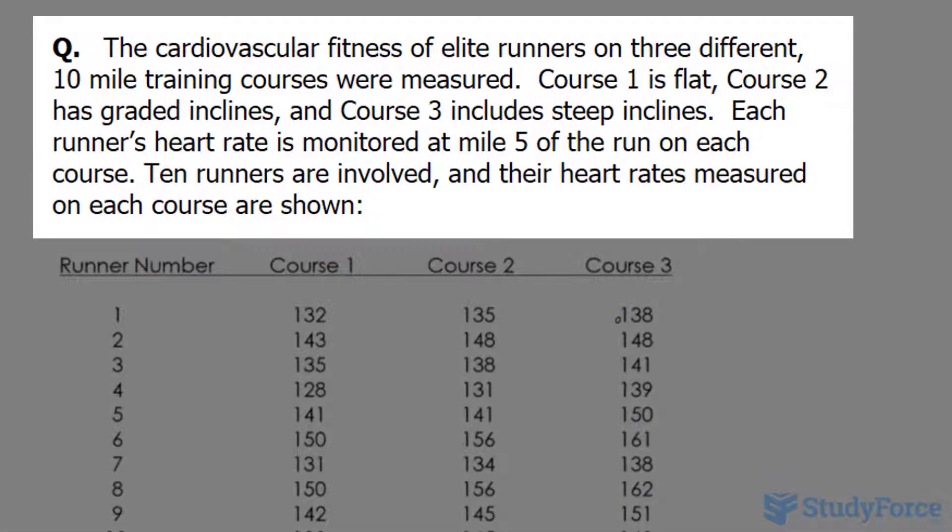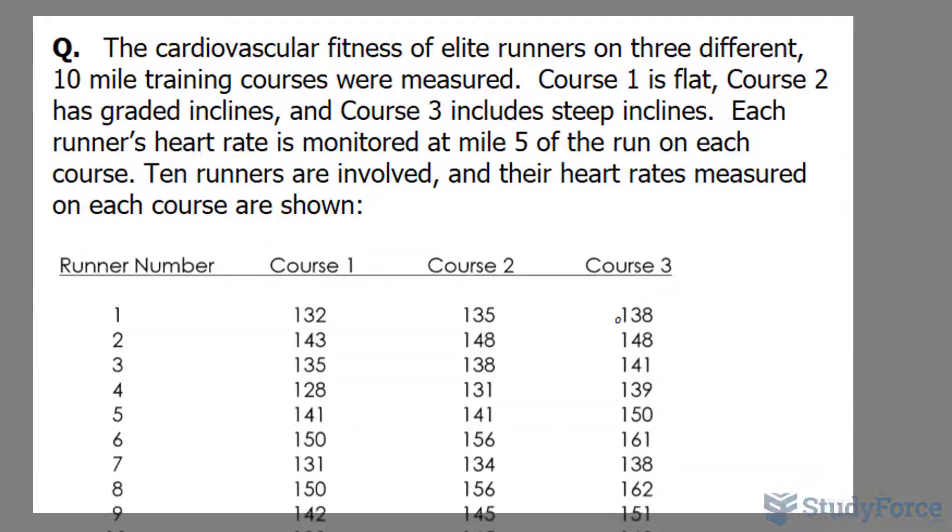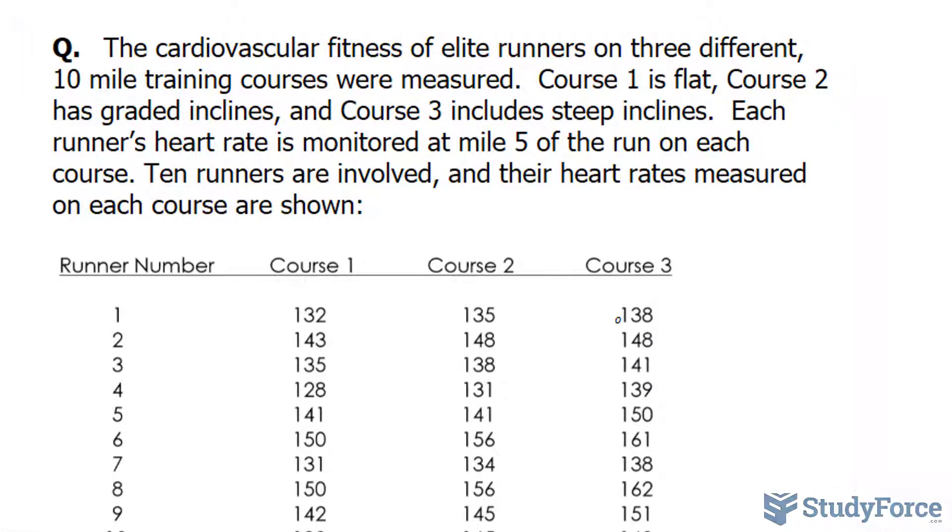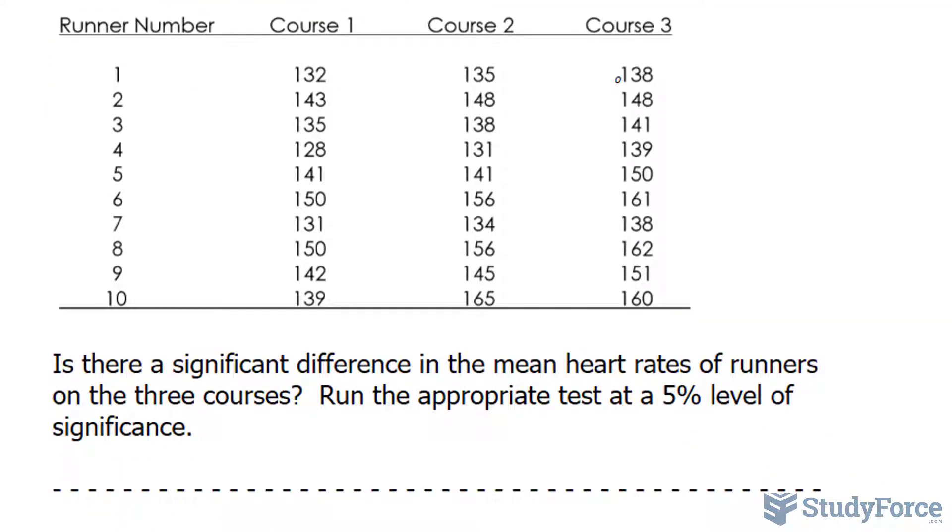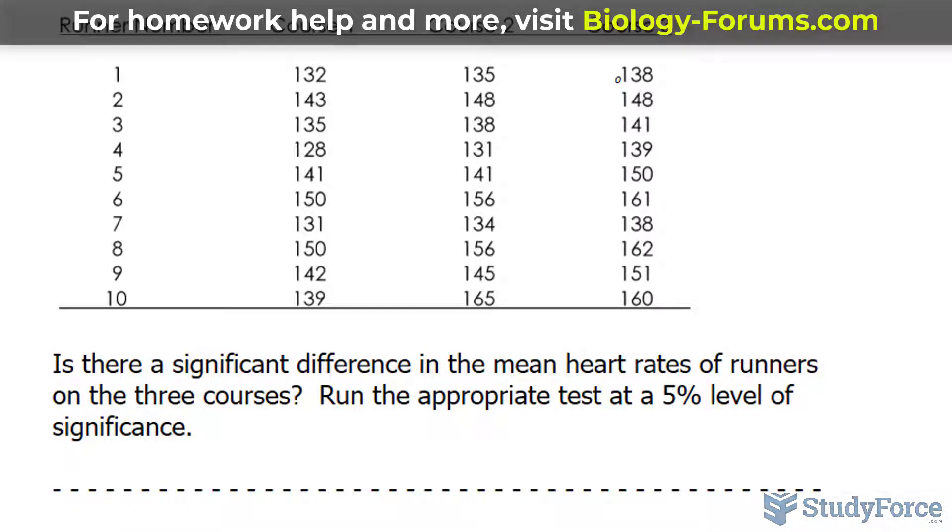The cardiovascular fitness of elite runners on three different 10 mile training courses were measured. Course 1 is flat, course 2 has graded inclines, and course 3 includes steep inclines. Each runner's heart rate is measured at mile 5 of the run on each course. 10 runners are involved and their heart rate is measured on each course is shown in this table. We have to find out if there's a significant difference in the mean heart rates of runners on the three courses. We have to run the appropriate test at a 5% level of significance.